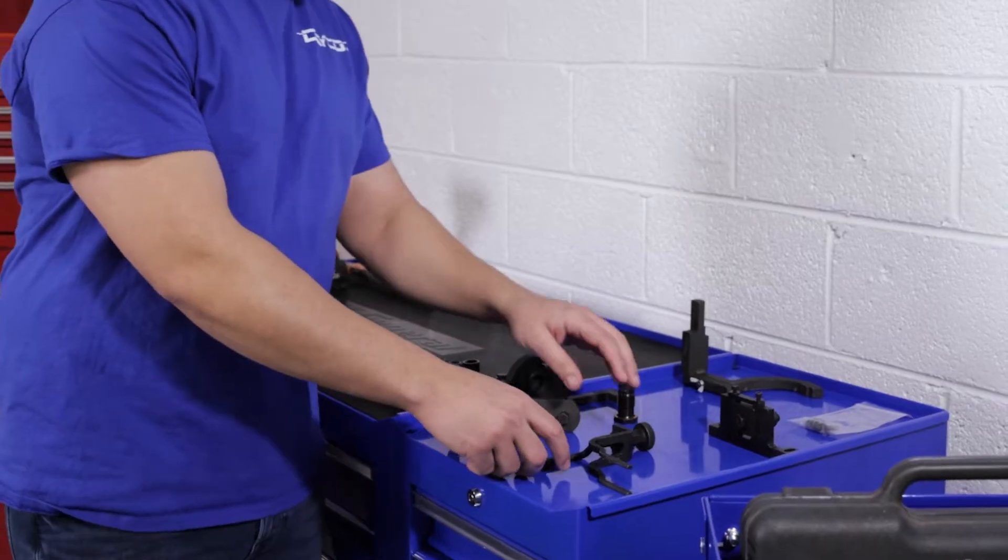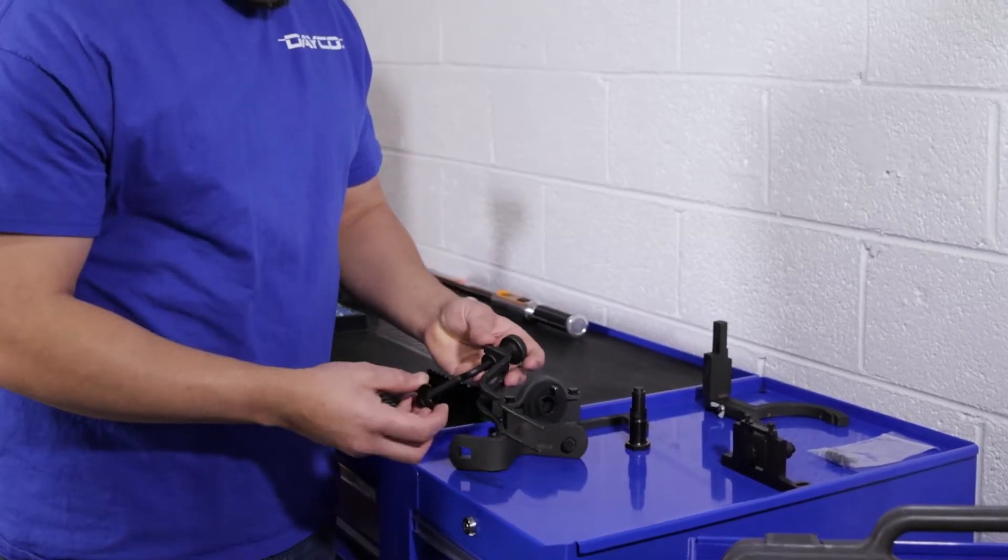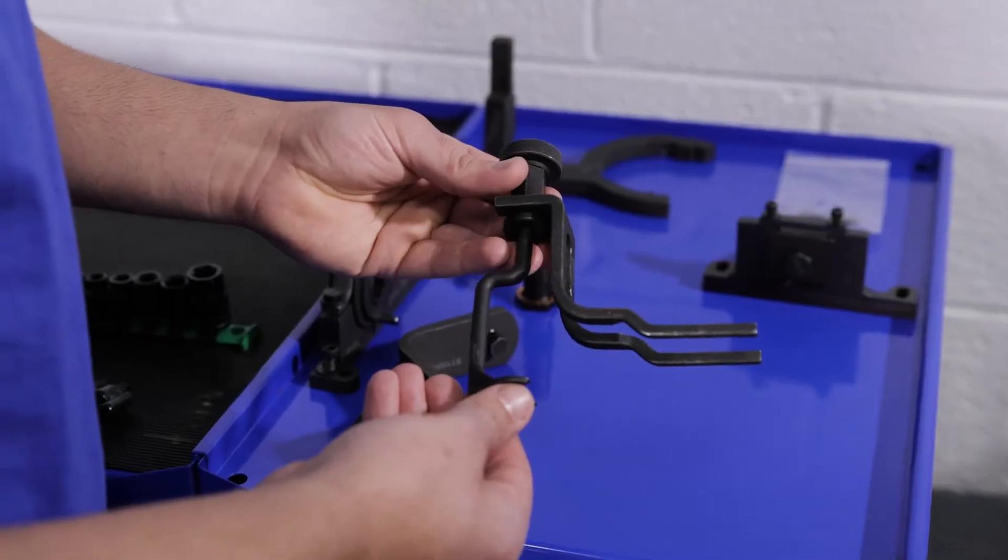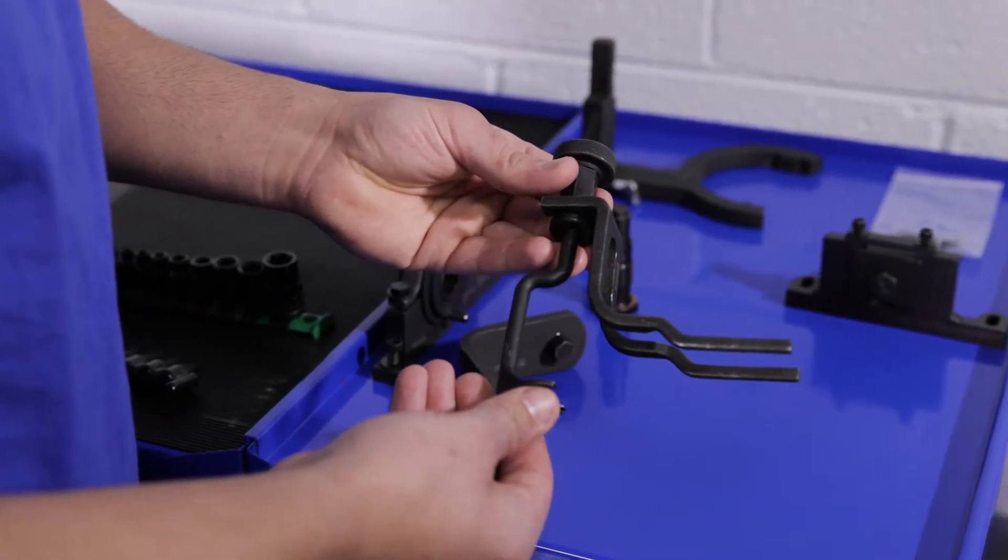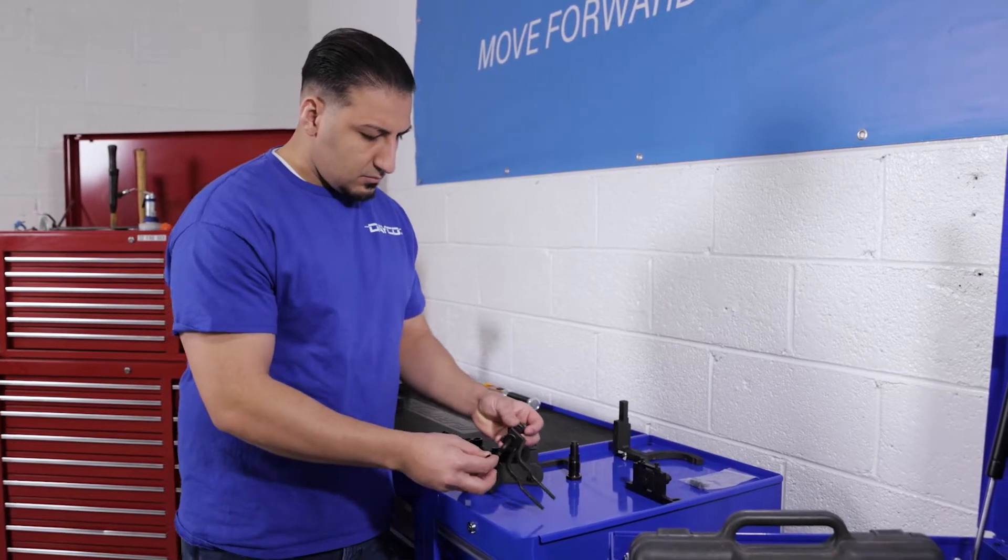The first tool is a valve spring compressor. It's used to compress the valve springs to facilitate removing the cam followers. This is not needed if the engine is at top dead center at the beginning of the job and the engine is not rotated during the job.